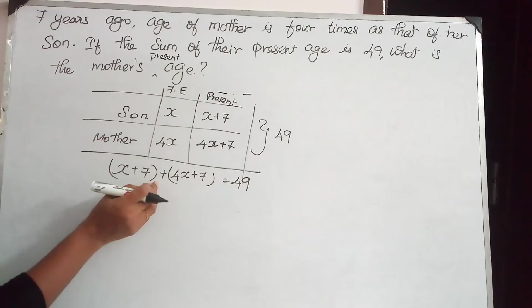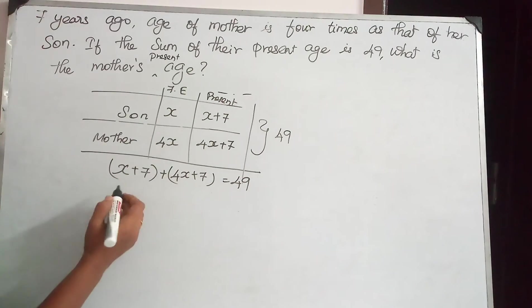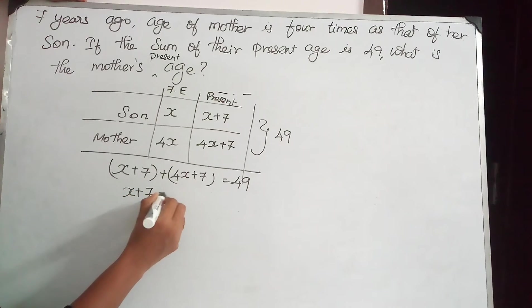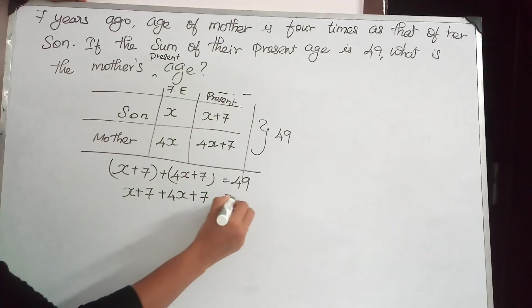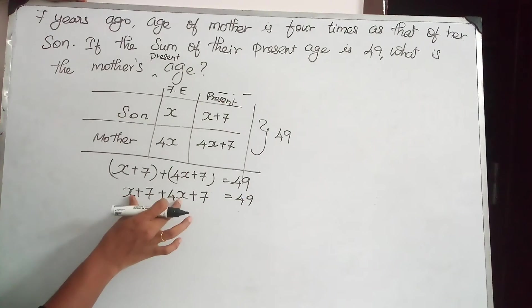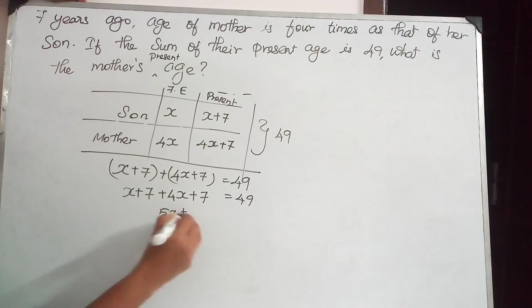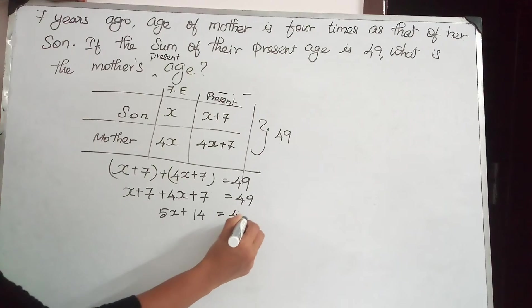Since there is plus sign here, we have to apply the plus sign. That will make no difference. X plus 7 plus 4X plus 7 is equal to 49. Add these two, 4X plus X is 5X. 7 plus 7 is 14 equal to 49.